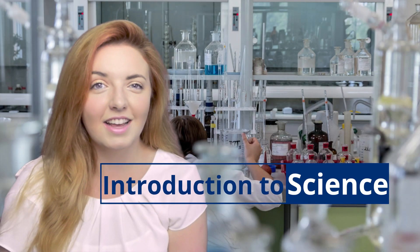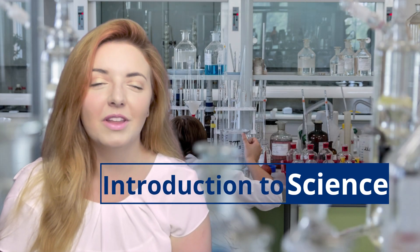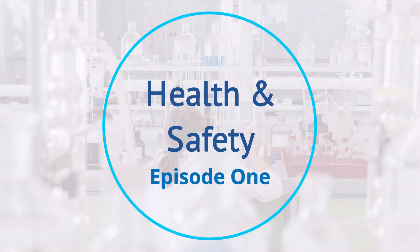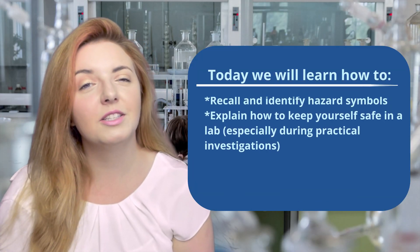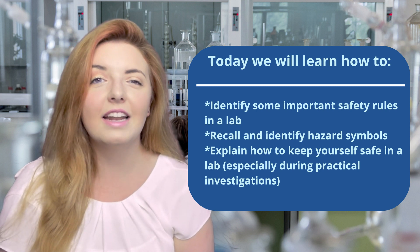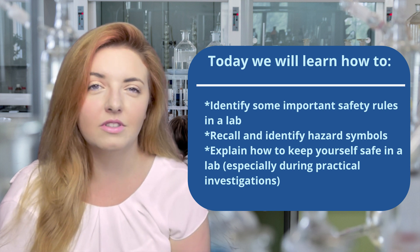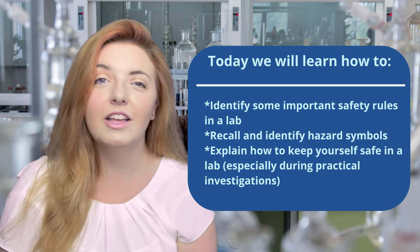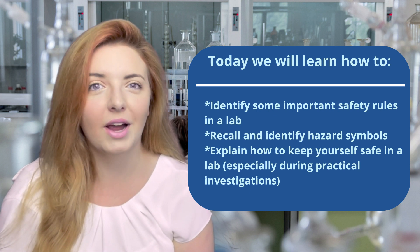Hi and welcome to episode one of a new series, Introduction to Science, here at BEYOND. We're going to be looking at all the skills that you need to know for science moving from primary school to secondary. Today we're going to be looking at health and safety in your science classroom. We're going to learn how to identify some safety rules in the lab, recall and identify some hazard symbols, and explain how to stay safe in the laboratory, including and especially during practical investigations.